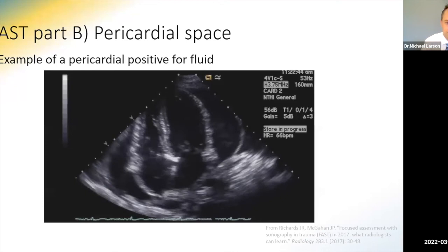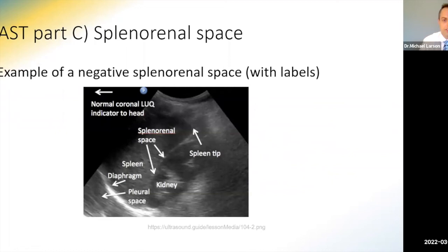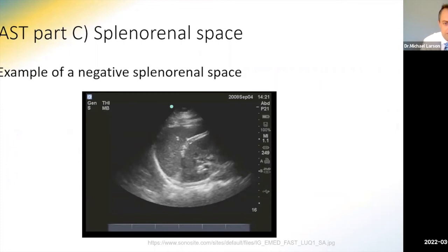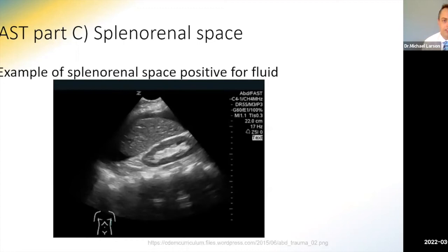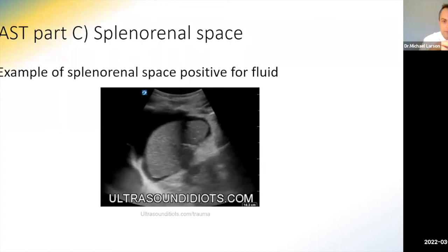The next portion is the splenorenal space or left upper quadrant, which should mirror the hepatorenal space. You may need to go really posterior because the spleen can be far back. If the patient can hold their breath to bring the diaphragm down, that's ideal. A key pitfall: if you focus only on the interface between the kidney and spleen, you might miss fluid actually around the spleen. Shifting the patient might cause the spleen to float away from the kidney. A positive splenorenal FAST exam shows anechoic fluid in that space.